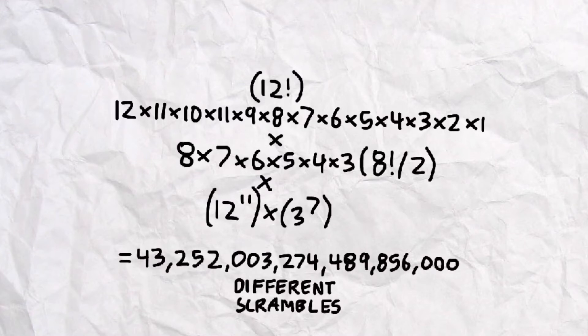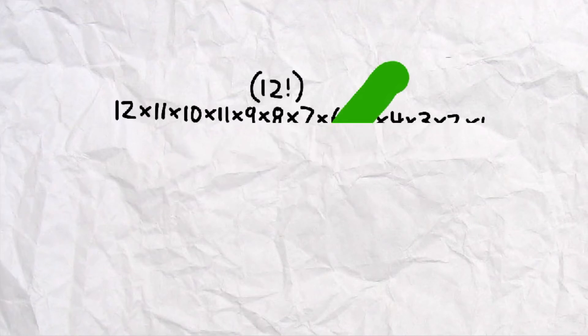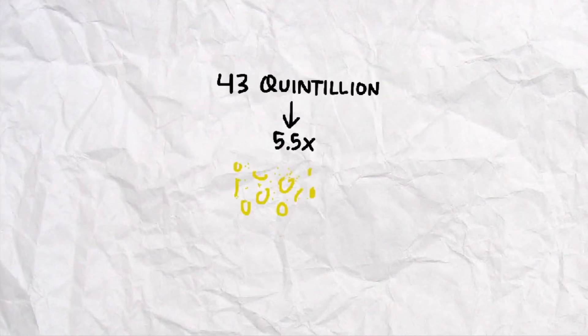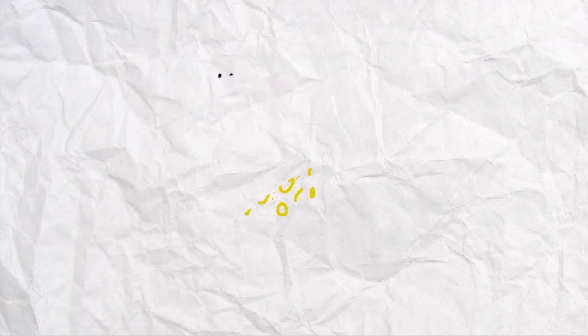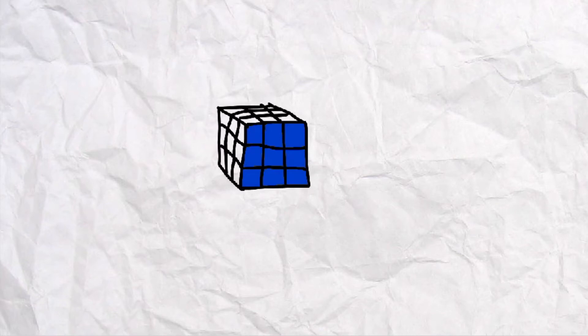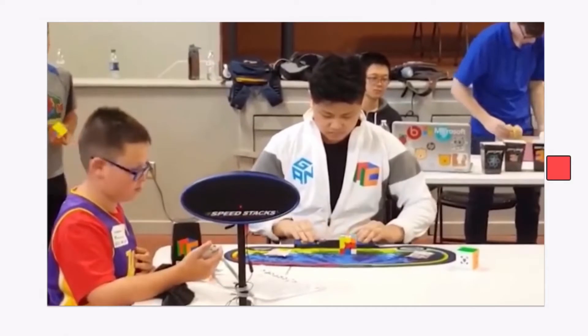Yes, I'll repeat that. 43 quintillion. That is more than 5.5 times the amount of grains of sand in the world. In fact, each time you turn a Rubik's Cube, you are likely to have created a completely new combination. This provides some perspective on why this puzzle is so hard to complete for first-time puzzlers.